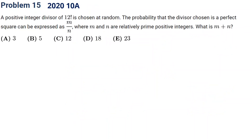The next problem is from 2020 AMC10A Problem 15 — a bit harder. Pause the video and think about it. The question asks for the probability that a randomly chosen divisor of 12! is a perfect square, expressed as m/n.